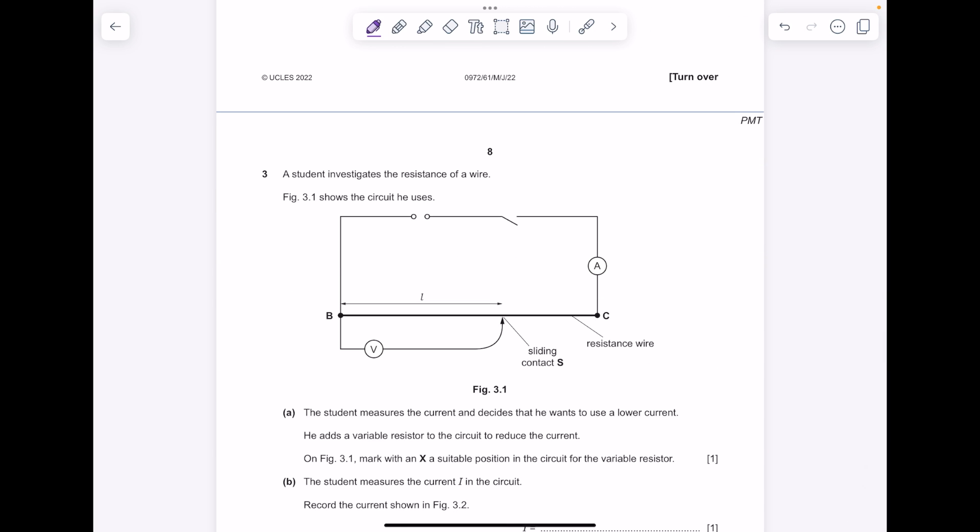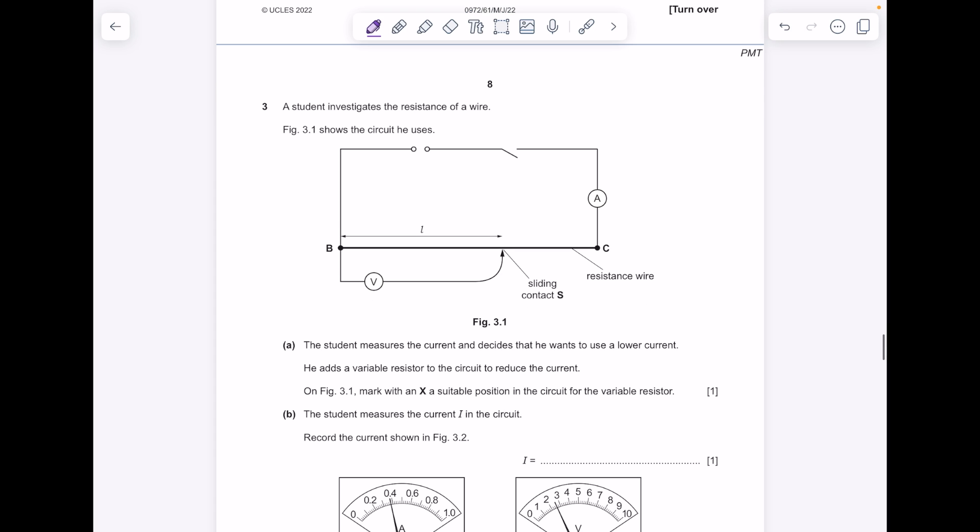The student investigates the resistance of a wire. Figure 3.1 shows the circuit he uses. The student measures the current and decides he wants to use a lower current. He adds a variable resistor to the circuit to reduce the current. On figure 3.1 mark with an X a suitable position in the circuit for the variable resistor. So you want to add it in series, it doesn't really matter where it goes. I'm going to pop it here.